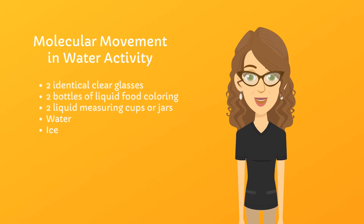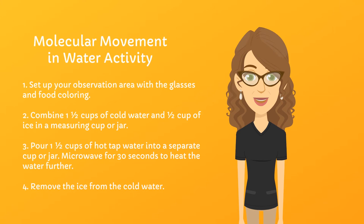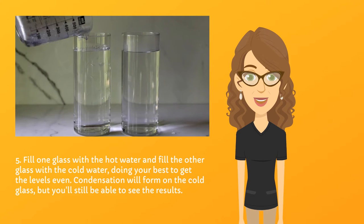Our next activity demonstrates molecular movement in water and it will help us see this principle in action. You'll need two clear glasses, preferably identical, two bottles of liquid food coloring, two liquid measuring cups or jars, water, and ice. Set up your observation area with the glasses and food coloring. Combine one-and-a-half cups of cold water and one-half cup of ice in a measuring cup or jar. Pour one-and-a-half cups of hot tap water into a separate cup or jar. Microwave for 30 seconds to heat the water further. Next, remove all the ice from the cold water.